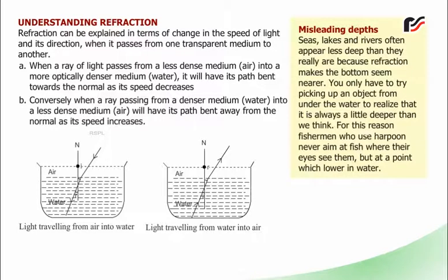Misleading depths: Seas, lakes, and rivers often appear less deep than they really are because refraction makes the bottom seem nearer. You only have to try picking up an object from under the water to realize that it is always a little deeper than we think. For this reason, fishermen who use harpoons never aim at fish where their eyes see them, but at a point which is lower in water.